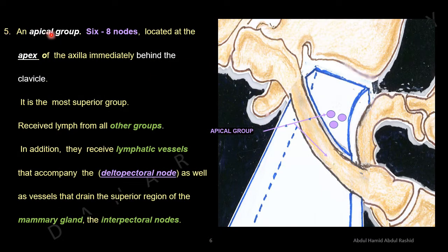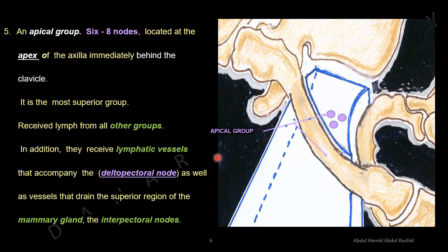Number five: the apical group. This is the apex of the right axilla lying behind the clavicle. The apical group consists of six to eight lymph nodes located at the apex of the axilla, immediately behind the clavicle. It is the most superior group and receives lymph from all other groups. In addition, it receives lymphatic vessels accompanying the deltopectoral nodes, vessels between the deltoid and pectoral muscles, as well as vessels draining the superior region of the mammary gland via the interpectoral nodes.